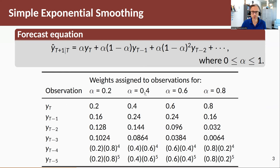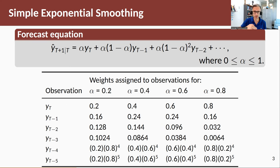Looking at specific alpha values: for alpha of 0.8, the last observation yt gets weight 0.8, the one before that 0.16, the one before that 0.032, and very quickly the weights approach zero. The higher the alpha, the faster the exponential decay. The lower the alpha, the slower the decay — meaning more weight is placed on distant past observations.